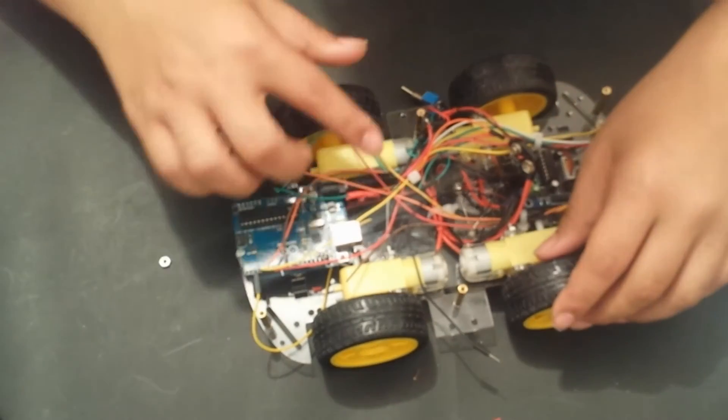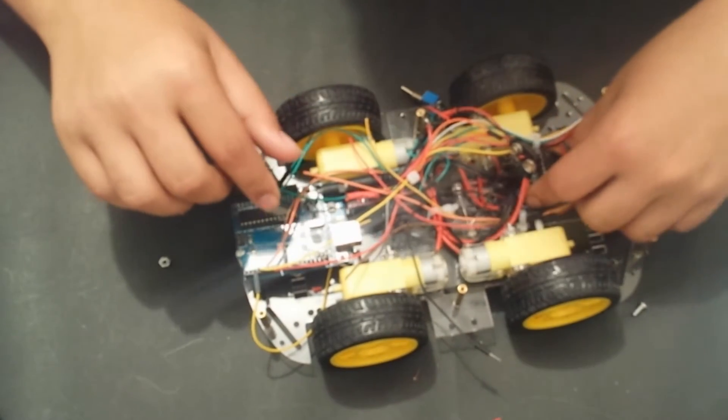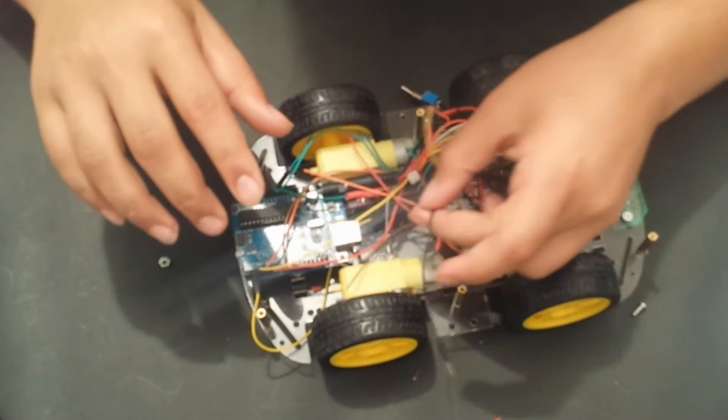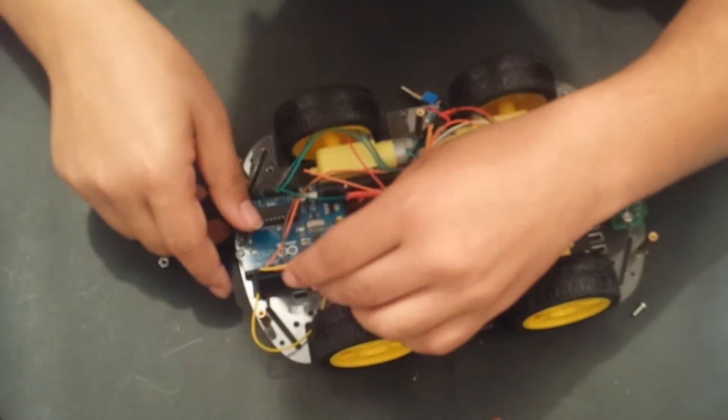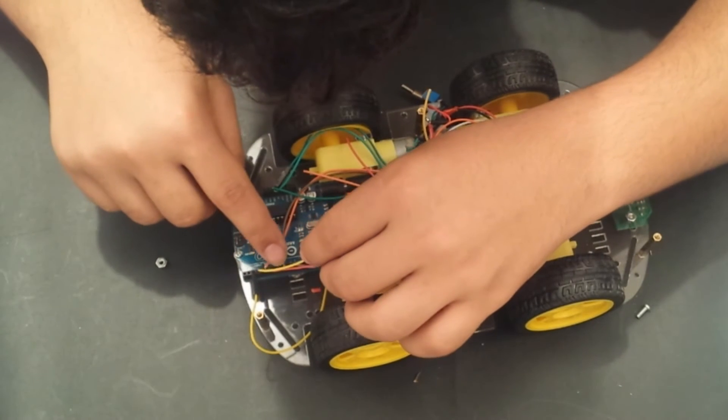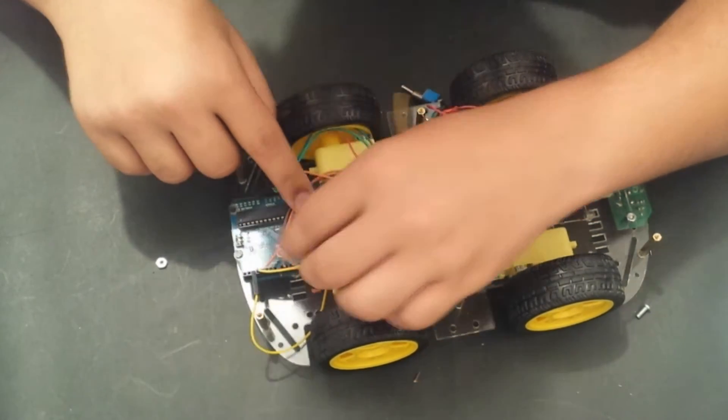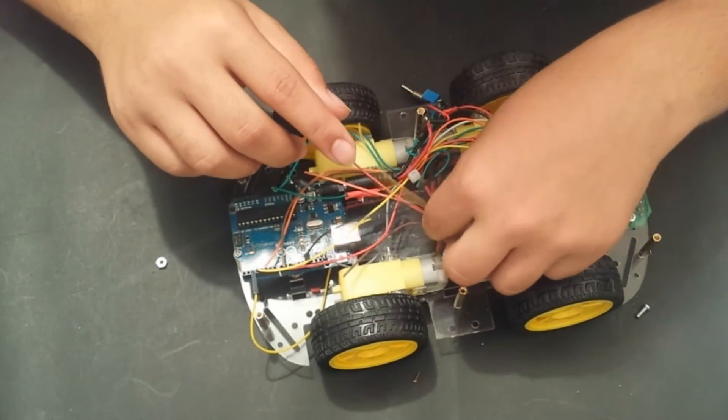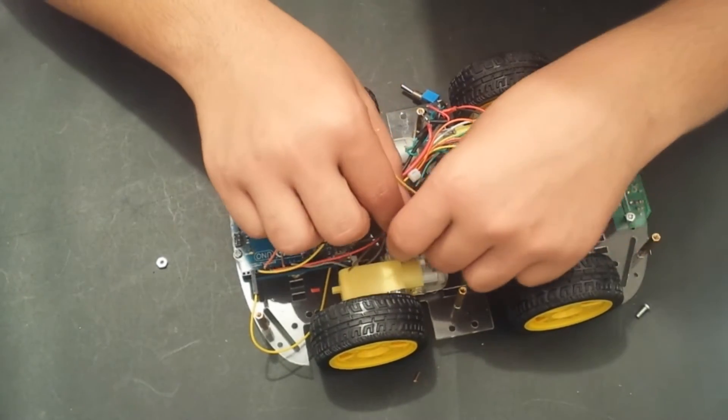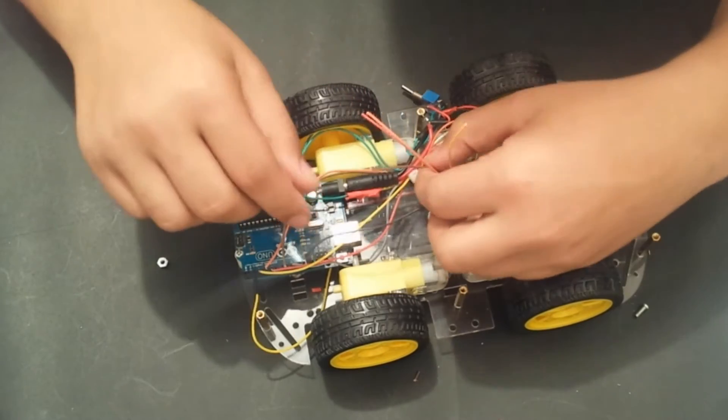Now that all the wires from the H bridge are connected, it is time to connect the new wires for the line following sensor. So the ground will go to the ground of the Arduino. Unfortunately, I am going to have to extend these wires a little bit more and I will be using some jumper cables to do that.